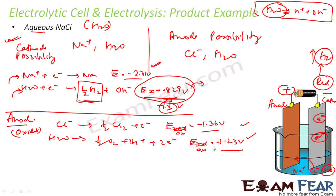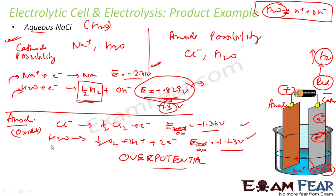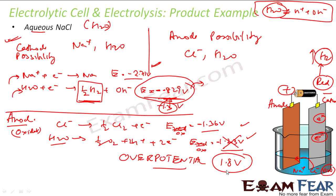But here is the catch. We have overpotential coming into play. For water, to oxidize water, it takes more than 1.8 volts minimum. So this 1.23 V is actually 1.8 V because of overpotential.